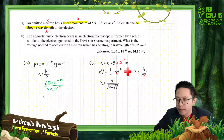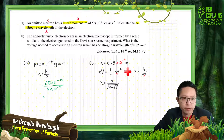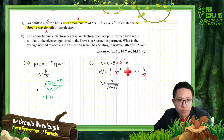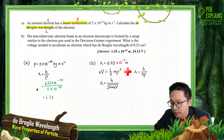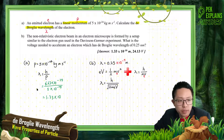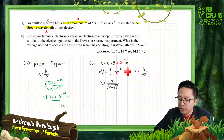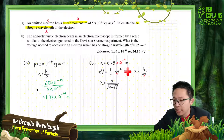Divide and the answer will be — if you divide, you will get 1.33×10⁻¹⁰ meter. That's the lambda.